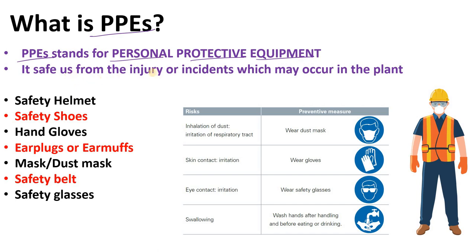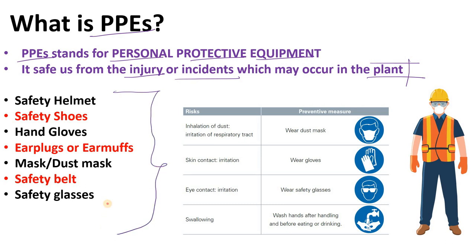PPE stands for personal protective equipment, which saves us from injury, incident, or any accident which may occur in the plant. Suppose if you are working in a plant and there may be any incident or injury — it will save us from that. There are some PPEs which I have mentioned here and there may be other PPEs as well.